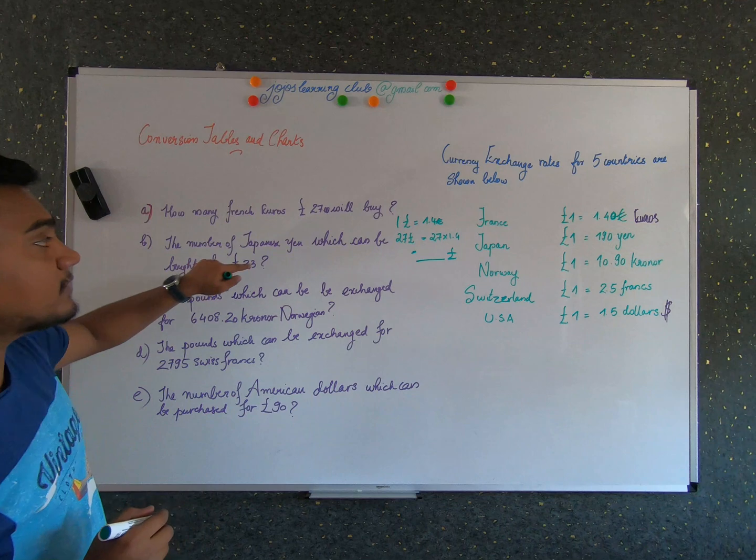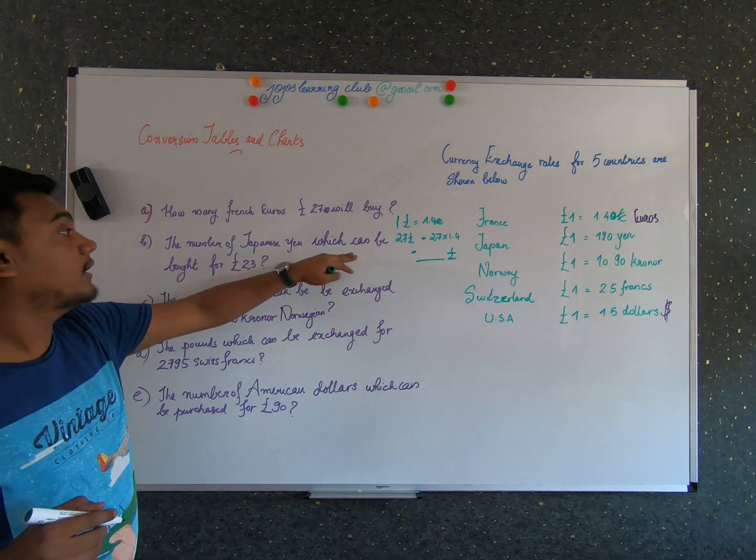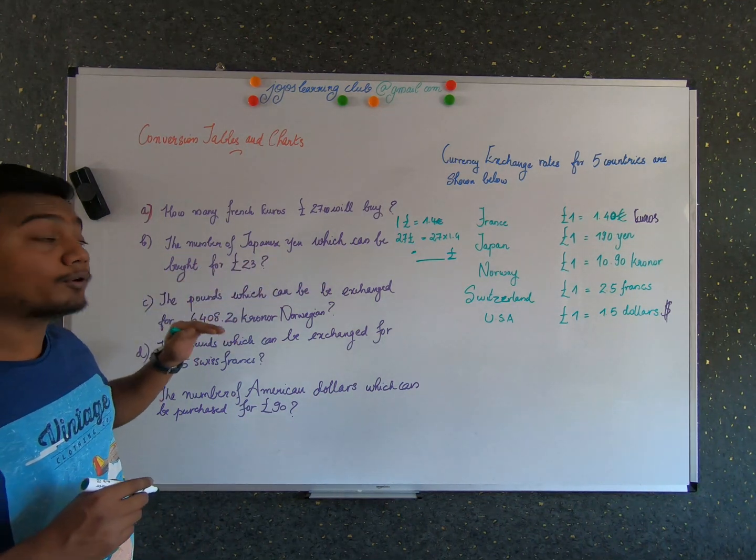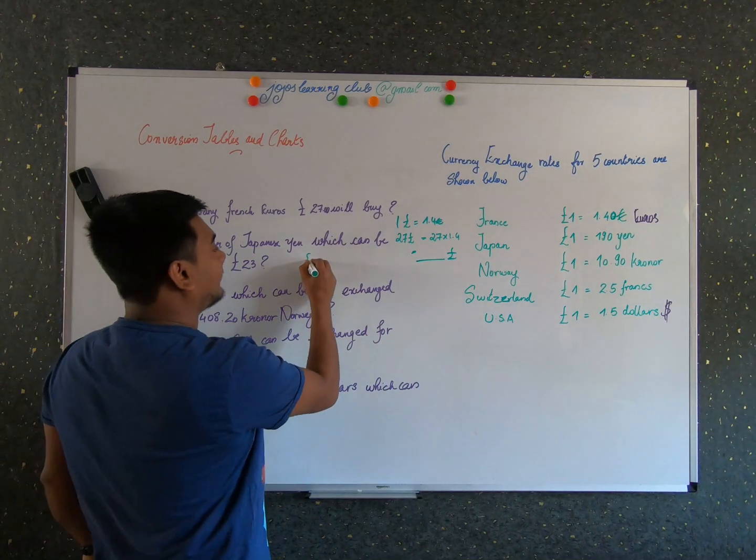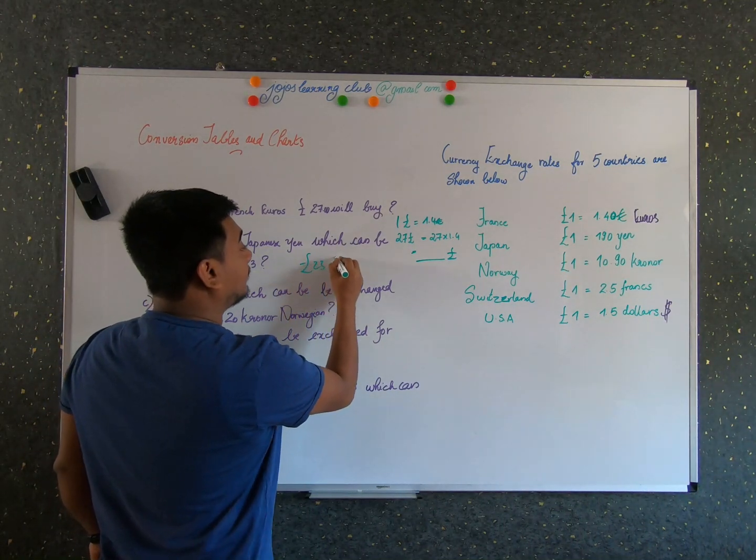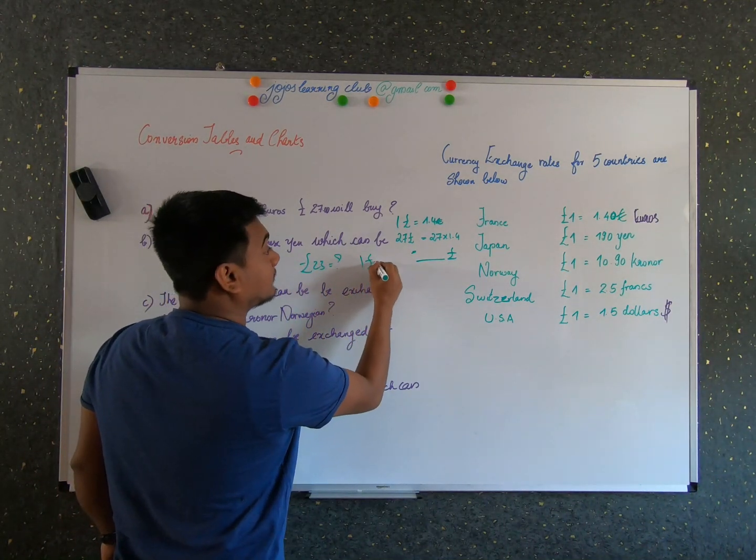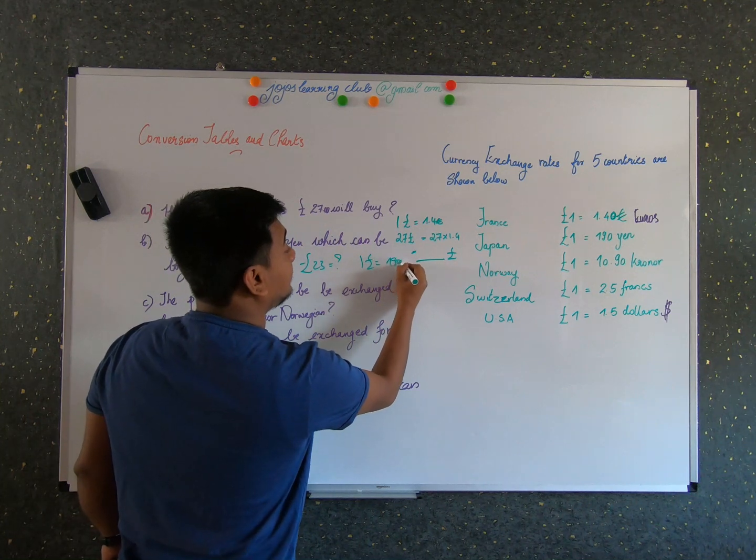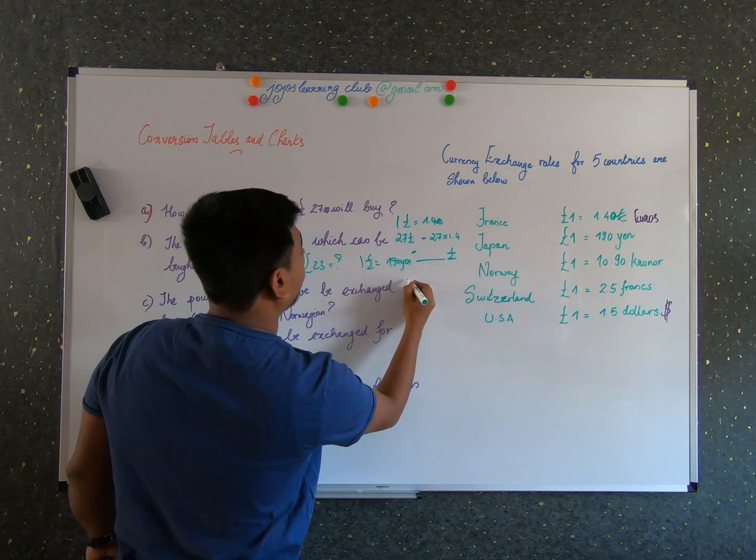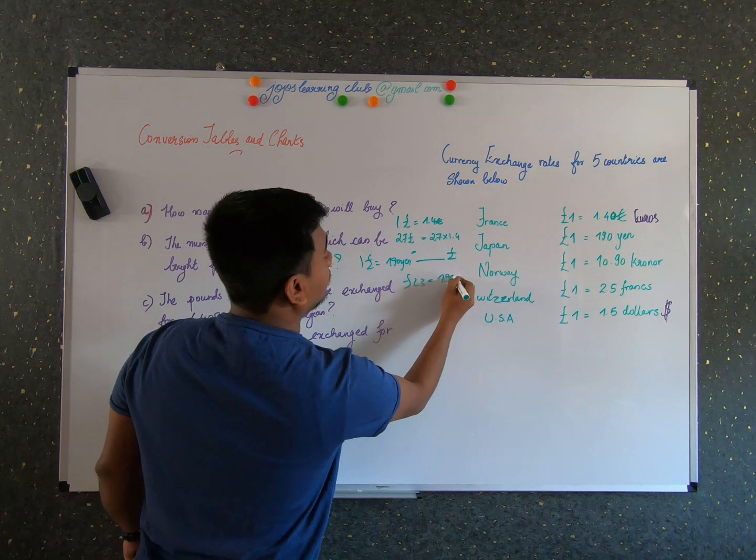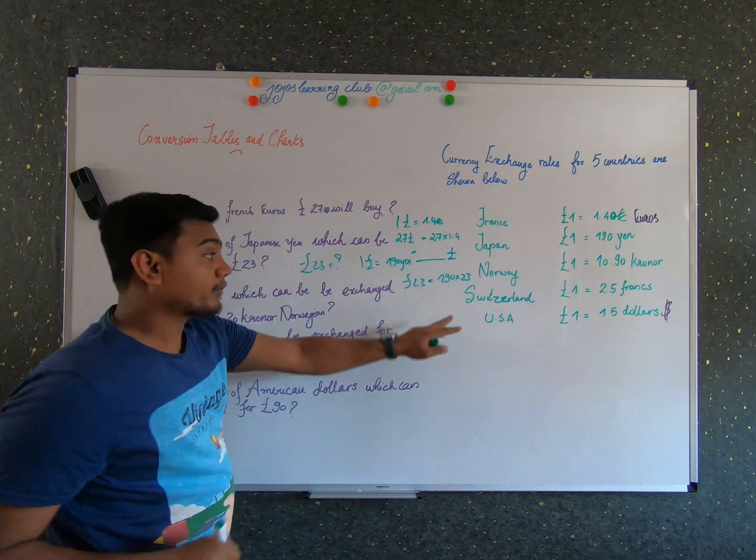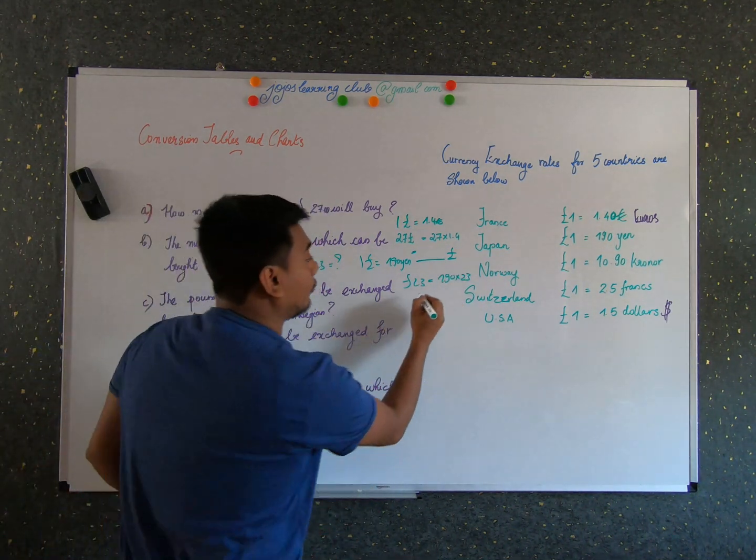And the next problem is number of Japanese yen which can be bought for 23 pounds. So we have now 23 pounds. And we know that one pound is 190 yen. So what would be 23 pounds? 23 pounds is nothing but 190 into 23. So this would be the answer.